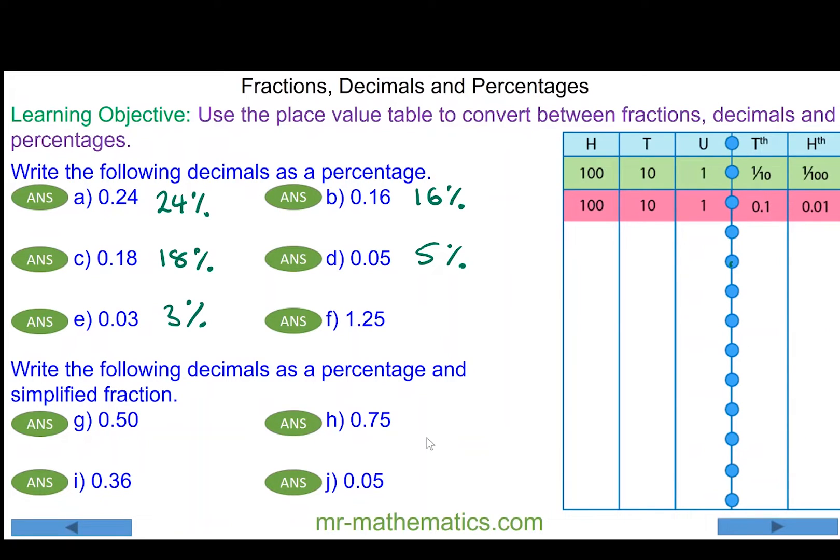Question f is interesting. We have 1.25, but in the one unit we have one hundred hundredths because a hundred divided by a hundred is one. We have two tenths, which we know is twenty over a hundred, and five more hundredths. So in total we have one hundred and twenty-five percent.